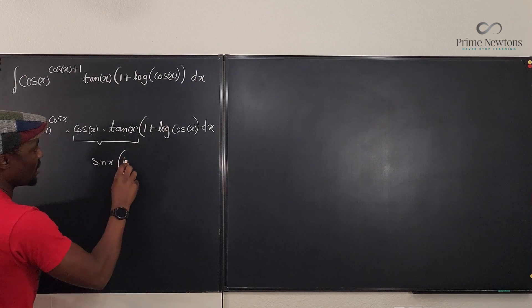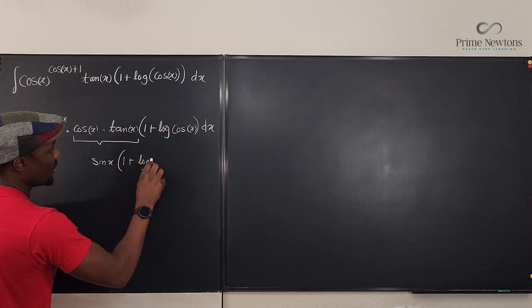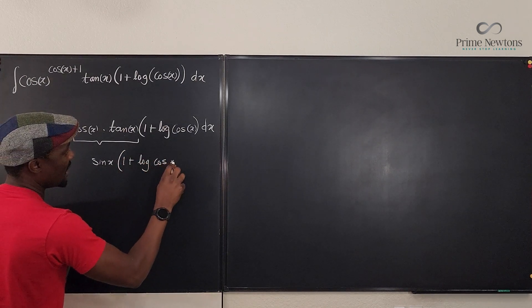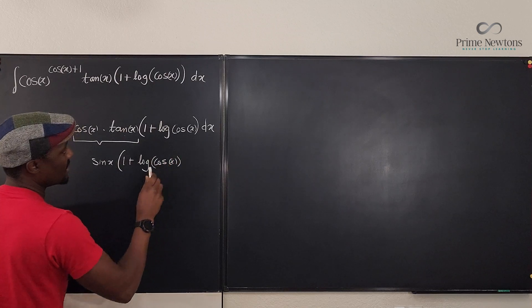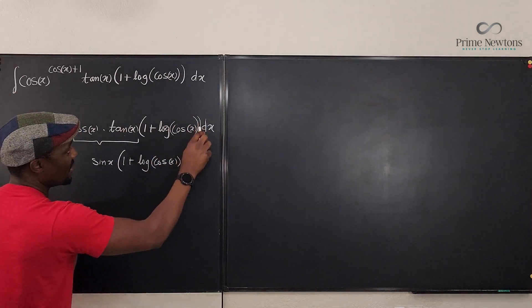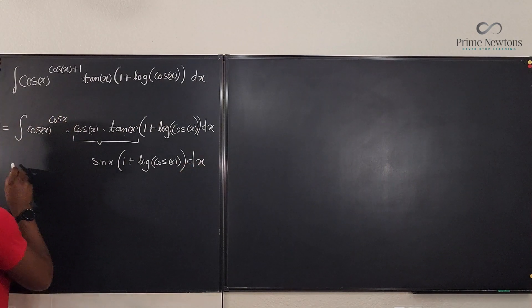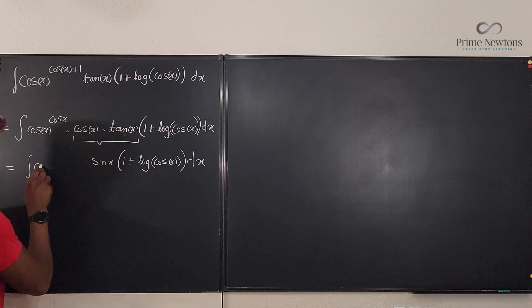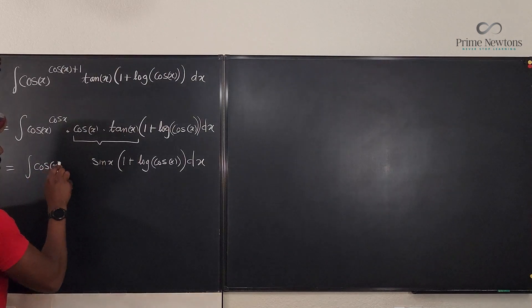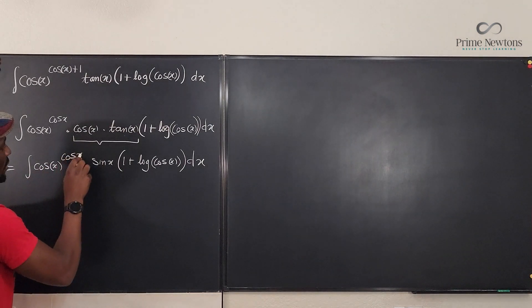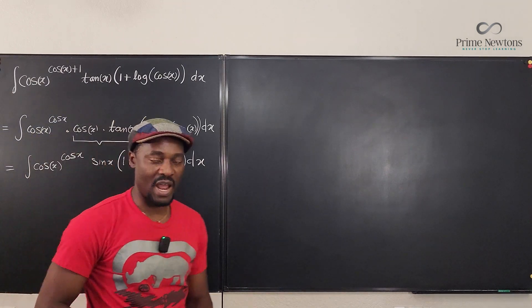Let's put this this way. Maybe I should have added one more parenthesis here. And you have dx. And here, I have this to be the integral of cosine x raised to cosine x. So that's what I have.